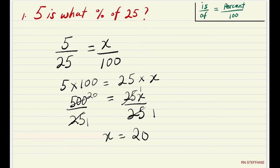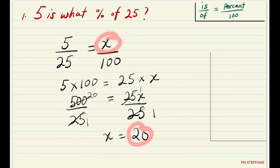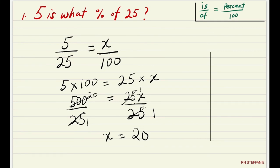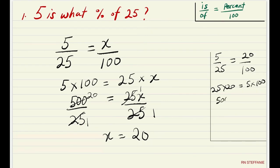We want to find out if our answer is correct, so we replace X with 20 and cross multiply to see if both sides are equal. 5 over 25 is equal to 20 over 100. Cross multiplying: 25 times 20 is 500, and 5 times 100 is 500 — it's equal on both sides, so that means our answer is correct.